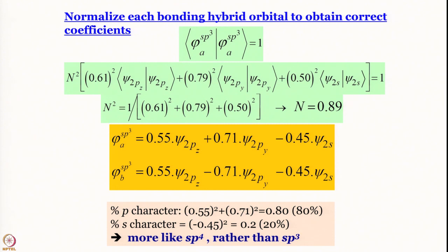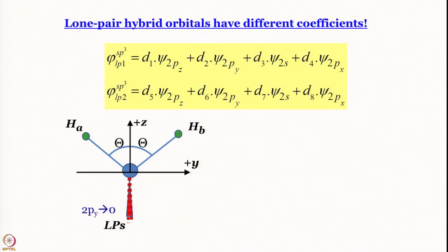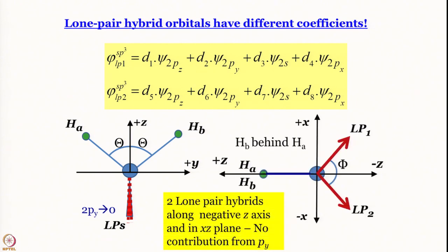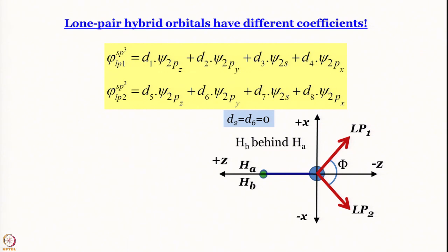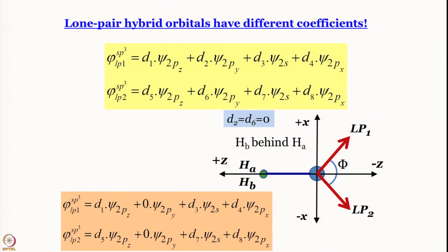For the hybrid orbitals accommodating the lone pairs, the hybridization must be spⁿ where n < 3, since the overall average must be sp³. We write general expressions for lone pair orbitals lp1 and lp2 with coefficients d1 through d8. Since these orbitals lie in the xz-plane, the coefficient of ψ(2py) is zero, so d2 = d6 = 0.